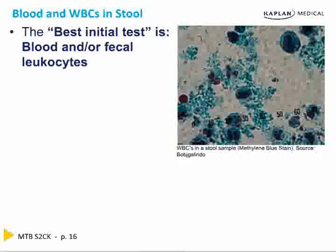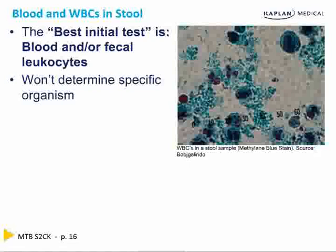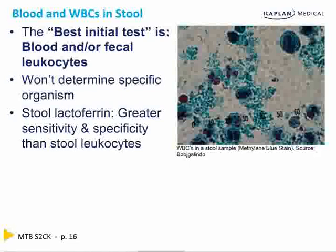The best initial test is fecal blood or fecal leukocytes. If they don't tell you there's blood in the stool, look for occult blood with the stool guaiac test. If they don't mention blood, do fecal leukocytes. It won't identify a specific organism, but it confirms you're in the Salmonella, Shigella, Yersinia, E. coli, Vibrio vulnificus, Vibrio parahemolyticus, or Campylobacter group.